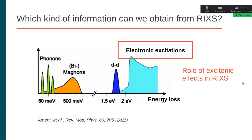I wanted to explain which kind of information we can obtain from RIXS and how RIXS spectra look. Normally in RIXS we plot the intensity or accumulated photons as a function of the energy loss. If you can resolve low-energy excitations, you could, for example, measure phonons or magnons. Most cases, RIXS is performed to study electronic excitations such as d-to-d transitions and other electronic excitations. In this presentation I will focus on these, and in particular I would like to put emphasis on the role of excitonic effects during this process.